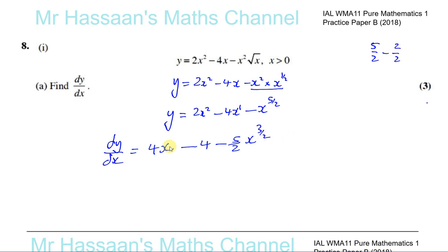So there we have our differential dy/dx. We can leave it like that for now. Then part (b) says: find the value of k such that d²y/dx² plus k times root x equals 4.